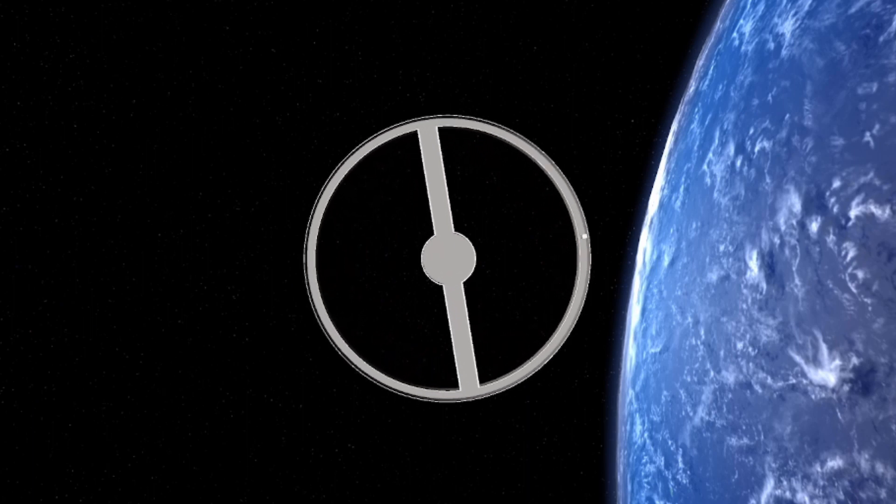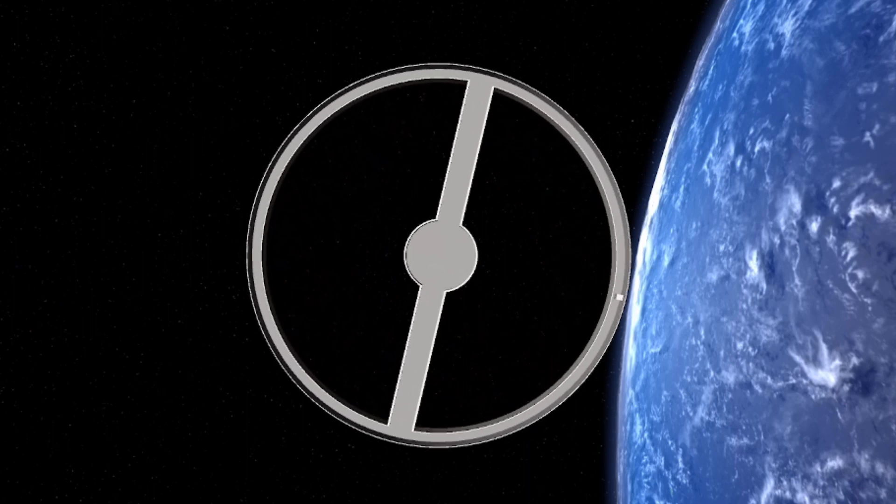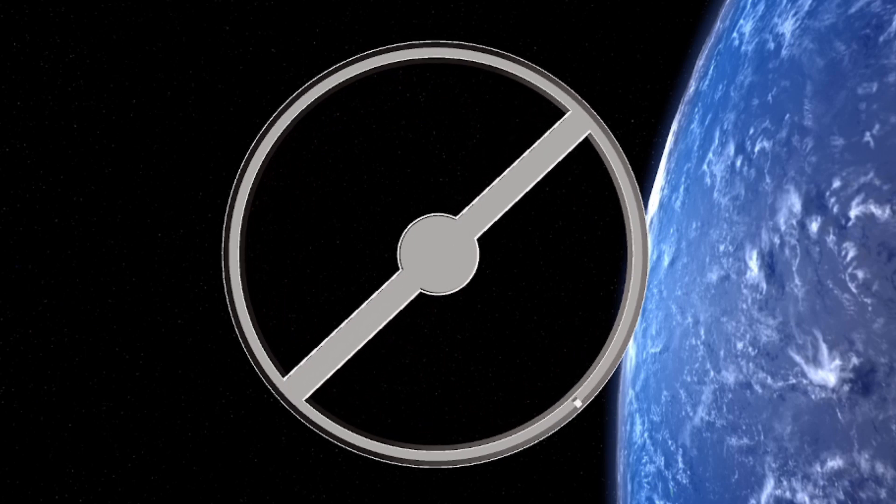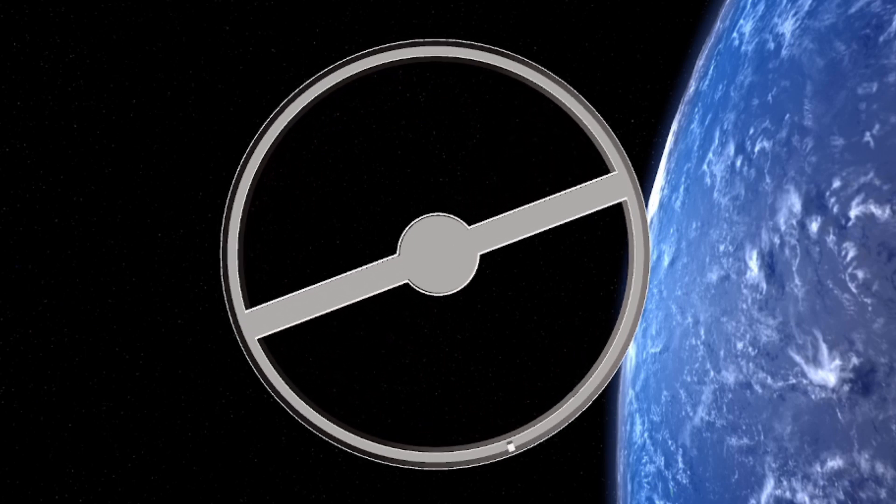This is the classic hard sci-fi artificial gravity: a big wheel that rotates on its axis, producing the sensation of gravity thanks to centrifugal force. As the ring rotates, everything inside of it is pushed away from the center to the outside surface. One drawback to this technique is the ring would need to be pretty large to avoid the uncomfortable effects of being in a rotating wheel.